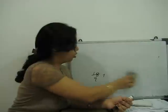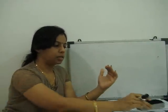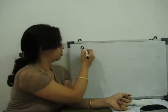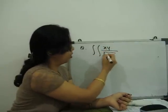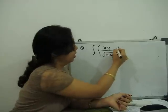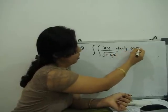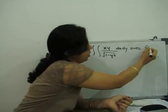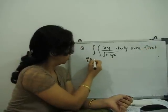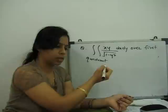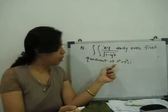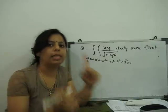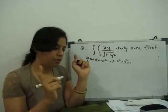For this we need to know curve tracing. I'll go for one very simple example. xy upon under root of 1 minus y square dy dx over the first quadrant of x square plus y square equal to 1. Everybody knows x square plus y square equal to 1 is the equation of a circle. Very good.